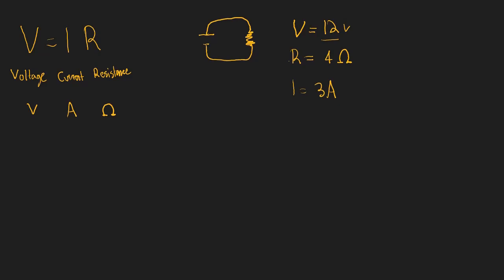We might also be asked about power. Another equation we should know is that power in a circuit equals I times V — I being current and V being voltage. Power is measured in units of watts.